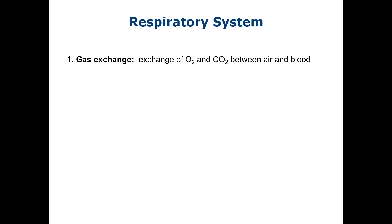The first, pulmonary ventilation, is the movement of air in and out of the lungs, done by the conducting zone. The second is external respiration, or the movement of oxygen from the lungs to the blood and of carbon dioxide from the blood to the lungs, done by the respiratory zone. Third, oxygen is transported from the lungs to the tissues of the body and carbon dioxide from the tissues to the lungs.